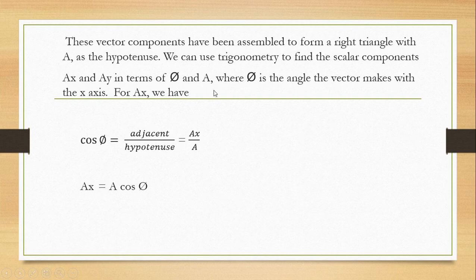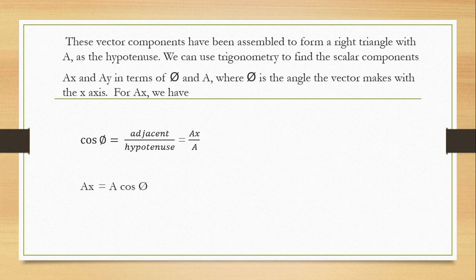For Ax, we can use the trigonometric functions: sine, cosine, and tangent. If you still remember, we use SOH-CAH-TOA. SOH means sine theta is equal to opposite over hypotenuse. CAH means cosine is equal to adjacent over hypotenuse.